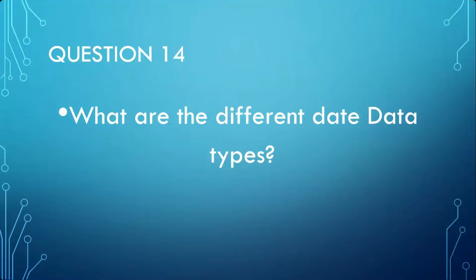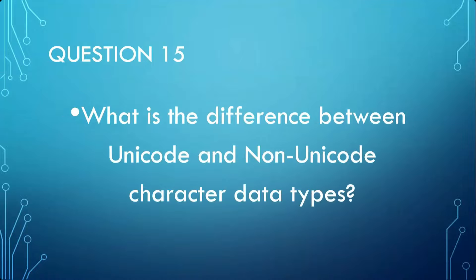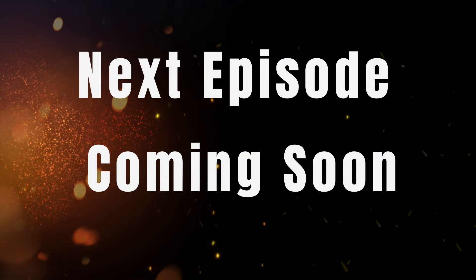We have decided to keep every episode to about 35 minutes, so this episode will continue in the next part. Episode 3 will start talking about the next set of questions on data types. The first question there will be: what is the difference between unicode and non-unicode character data types? You can think about it, and you will get the answer in the next episode. Thank you.